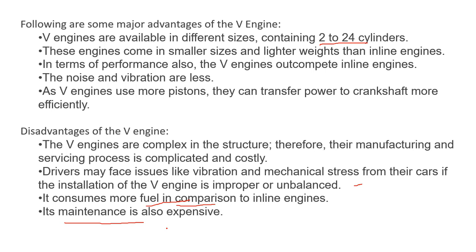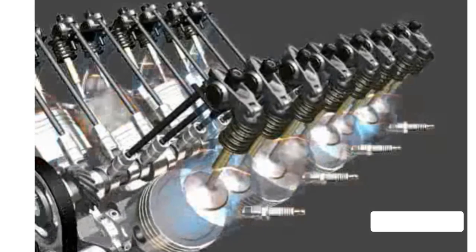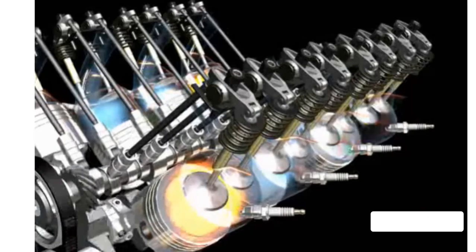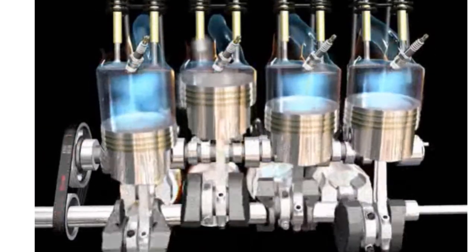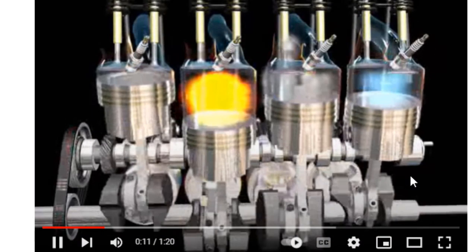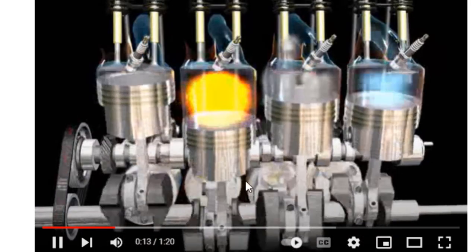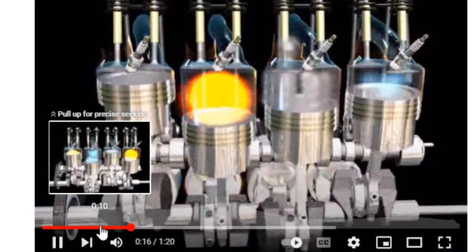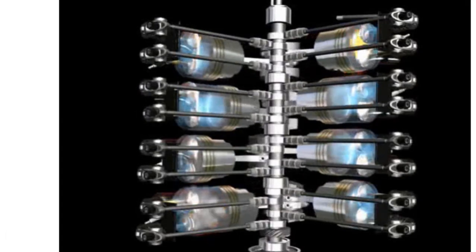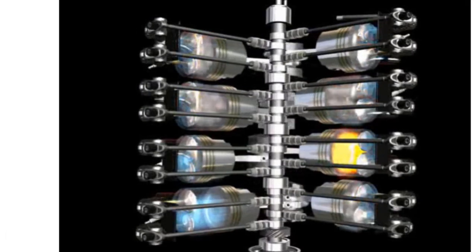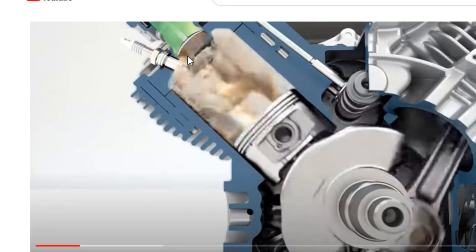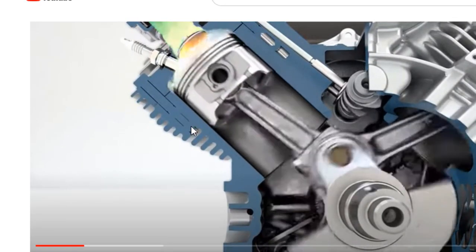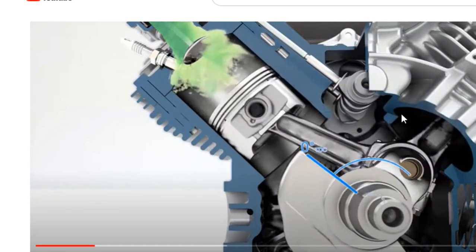Now I would like to show you some videos from YouTube. For example, in this video you can see several pistons connected—this is an inline IC engine, an inline engine. Whereas in the previous video it is a V engine. Here you can see the pistons are connected. In this example you can see the V engine.